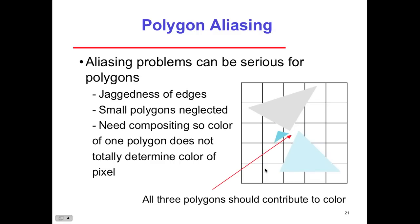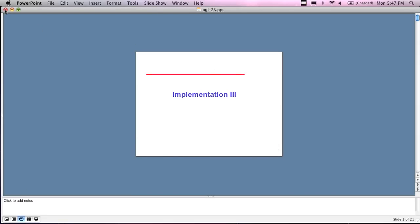Anti-aliasing creates what looks like a smoother line from a distance, but when you zoom in you see the multi-color shading variation — imprecise yet looks more precise from afar. Polygon aliasing beyond line aliasing has serious problems: polygons with jagged edges, small polygons neglected, and needing composition. One polygon does not totally determine the color of the pixel — all three polygons should contribute to the color being implemented.